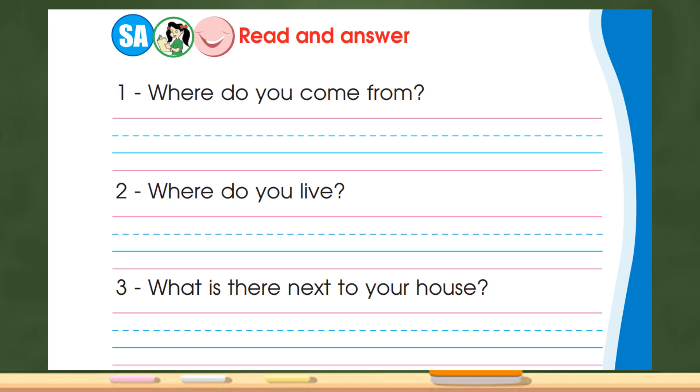We have three questions. Number one: where do you come from? Number two: where do you live? Number three: what is there next to your house? Let's answer. Number one: where do you come from? Very good, I come from Kuwait.